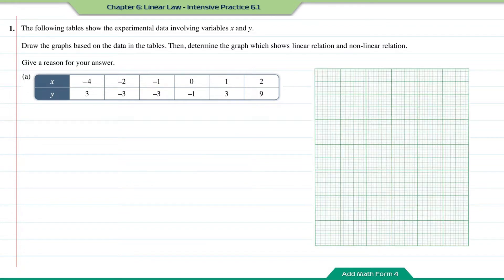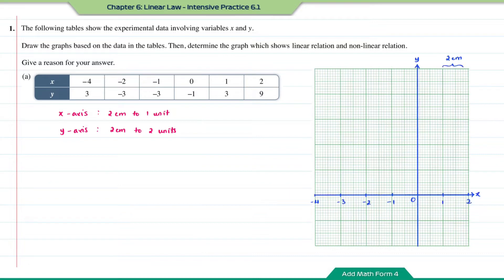For the x-axis I'm going to use 2 cm to 1 unit, and for the y-axis 2 cm to 2 units. Now let us plot the scale first, then plot the points given in the table onto the graph.